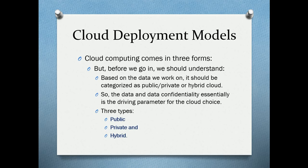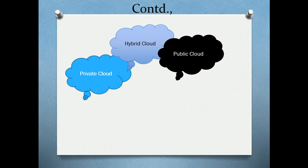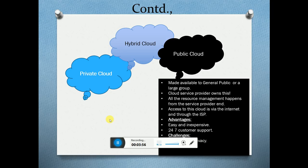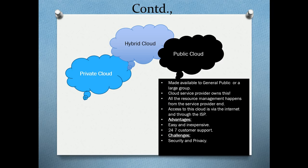There are three cloud deployment models: public, private, and hybrid. Public cloud is something any general public can use. The cloud service provider has complete ownership, complete monitoring, and handles all maintenance. All resource management is taken care of by the cloud service provider, and you connect via your internet service provider.